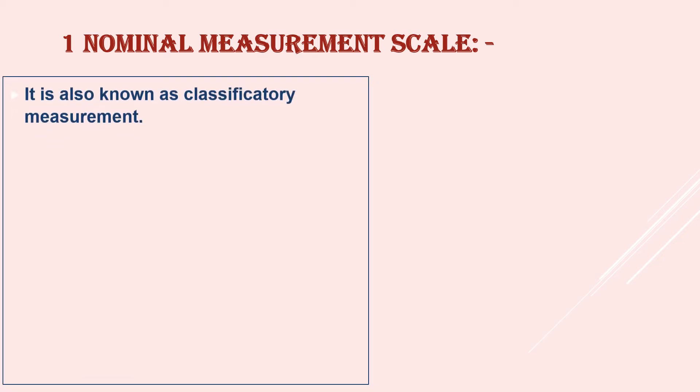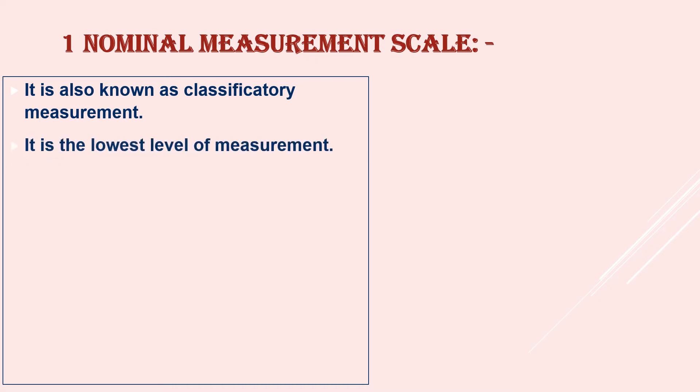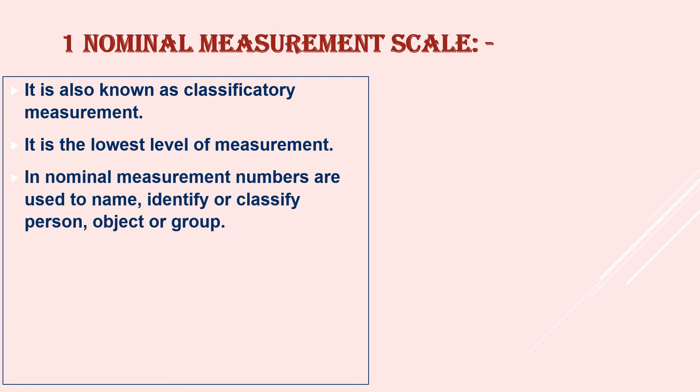So first see nominal measurement scale. It is also known as classificatory measurement and this is the lowest level of measurement. In nominal measurement scale, numbers are used to name, identify or classify person, object or group. Examples of nominal data - otherwise nominal measurement scales - are religion,